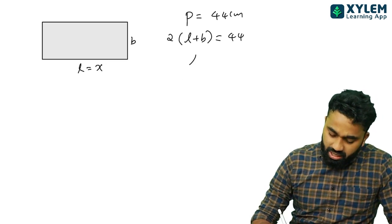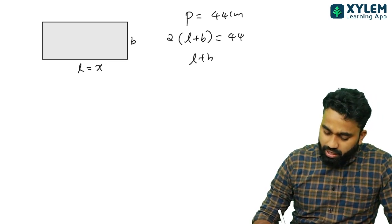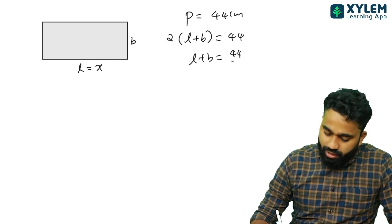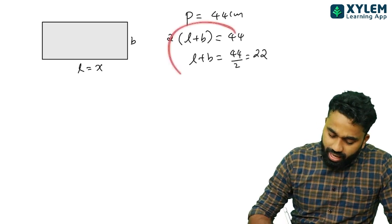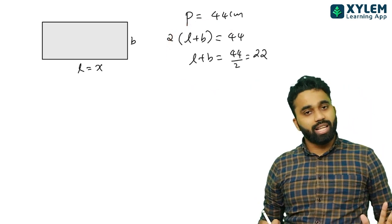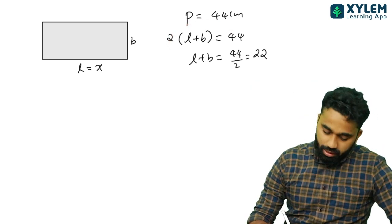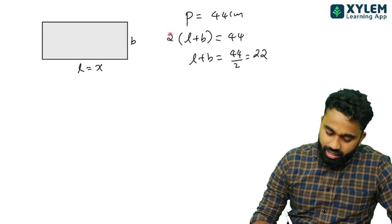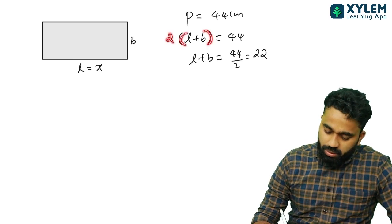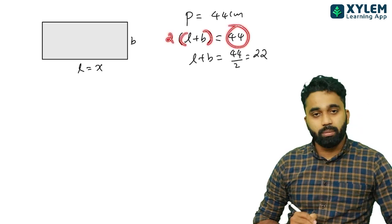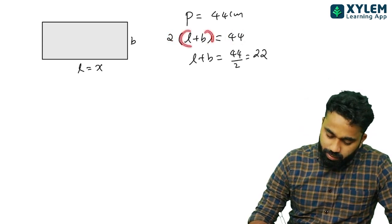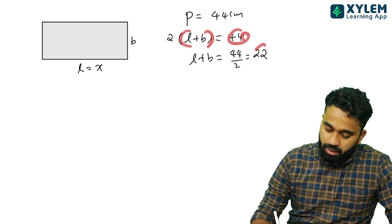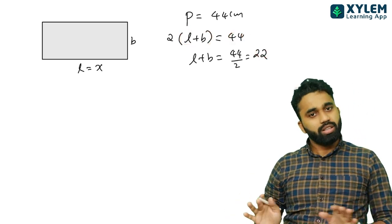Length plus breadth equals 44 by 2. So I will assign: 2 times the quantity length plus breadth equals the perimeter. I want to show length plus breadth. This is important.